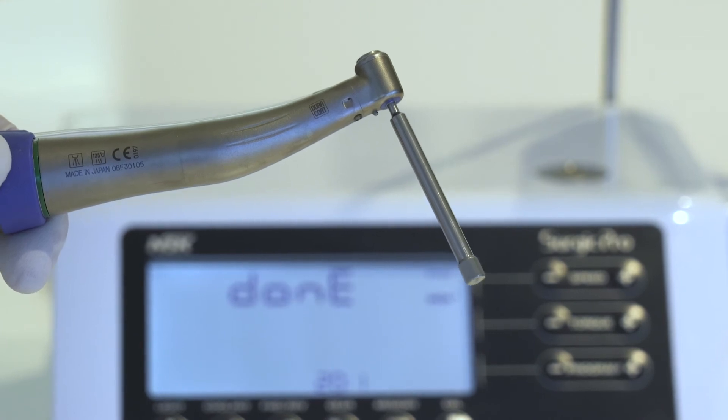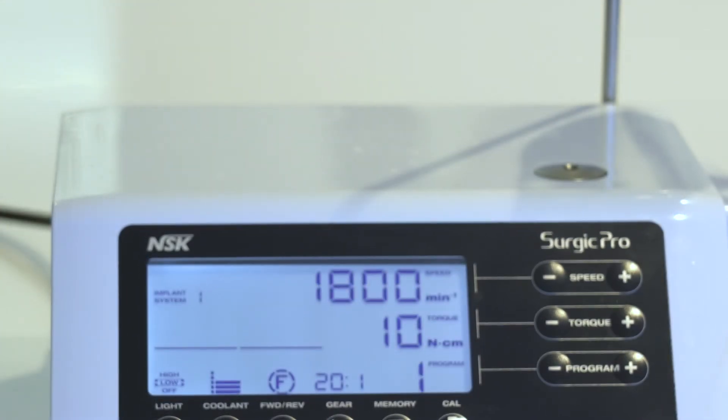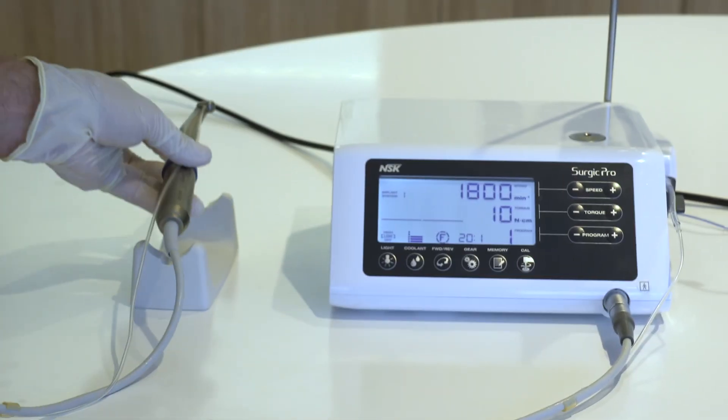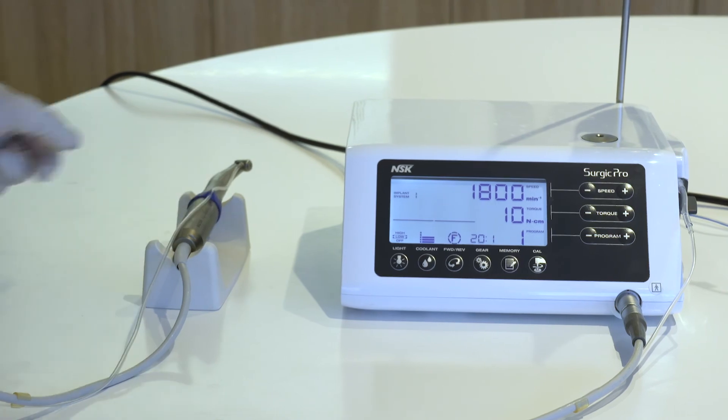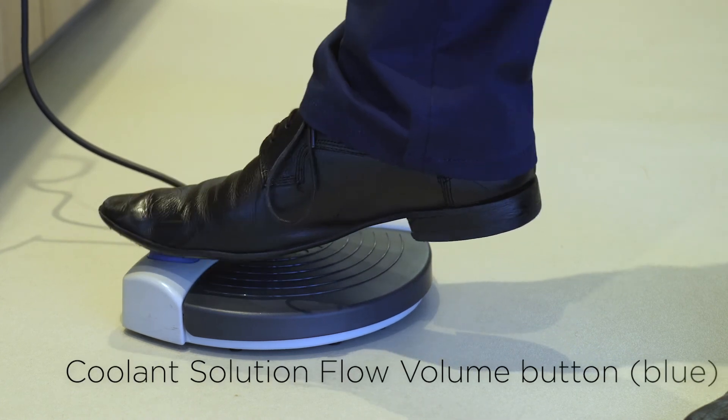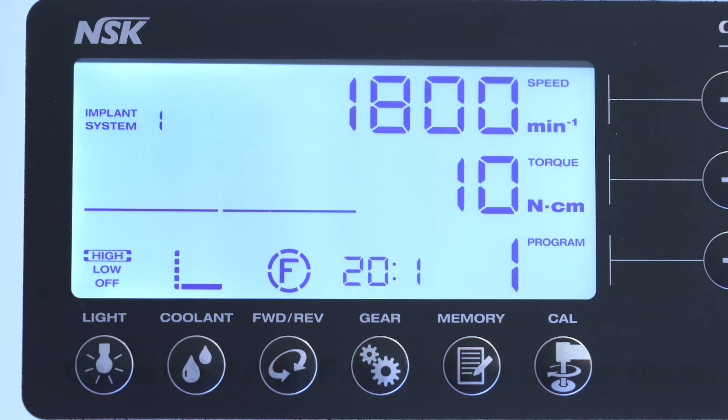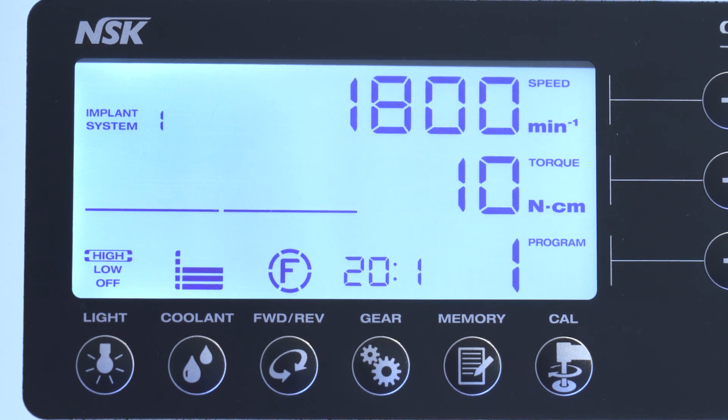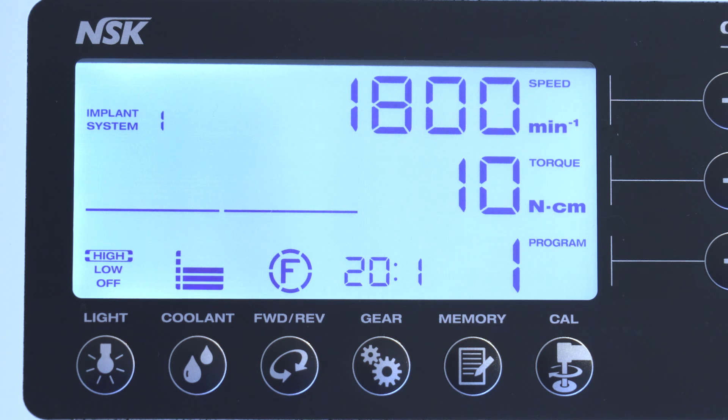Calibration mode will finish automatically and return to normal screen again. Coolant Solution Flow Volume Button Blue. Use to select 6 levels of coolant solution flow from 0 to 5. Each level may be increased by one step by pressing this button. If you press the button in level 5, it returns to 0.